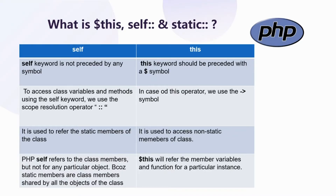Self is a keyword not preceded by any symbol, whereas $this is a keyword that should be preceded by the dollar symbol. To access class variables and methods, using self we use the scope resolution operator, whereas with $this we use the arrow symbol.